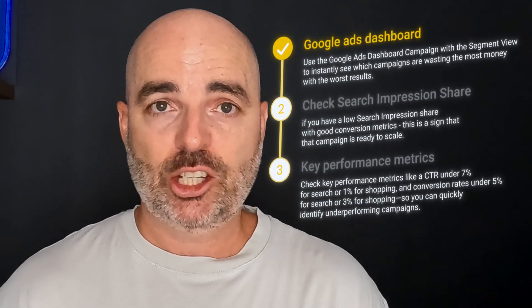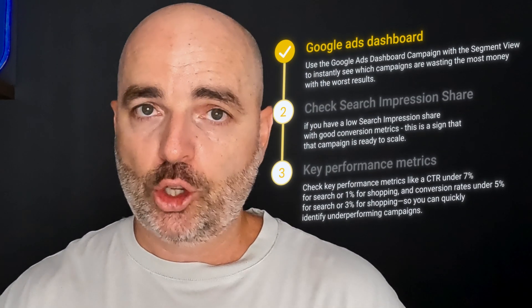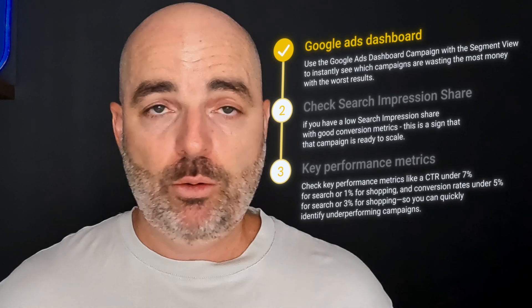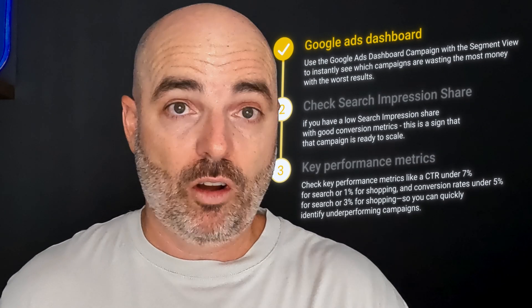I want to take you through my three-minute process — it'll take a little longer because I'm explaining it, but you'll know the individual steps so you can start applying this in your own accounts. This is a three-step process. The first step is going to the Google Ads dashboard and looking at a longer term of data, anywhere between three to twelve months, to see overall trends.